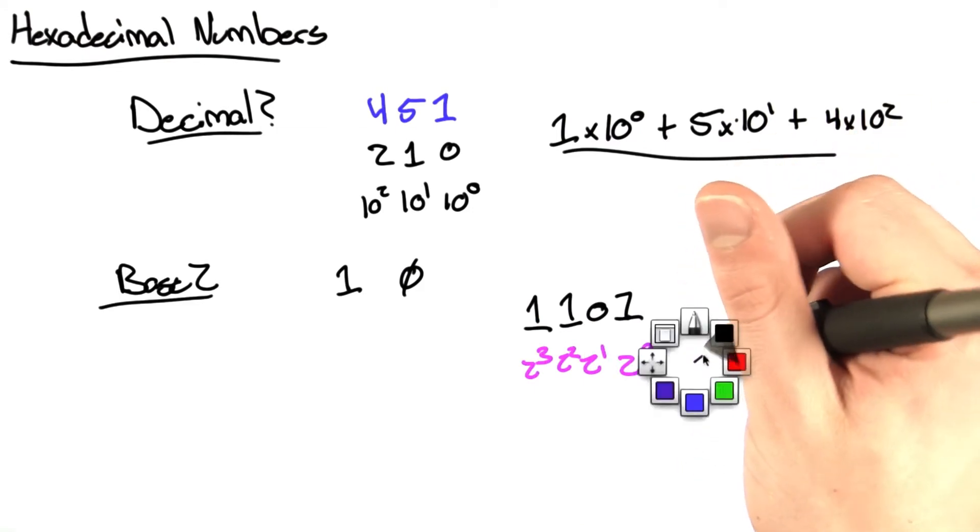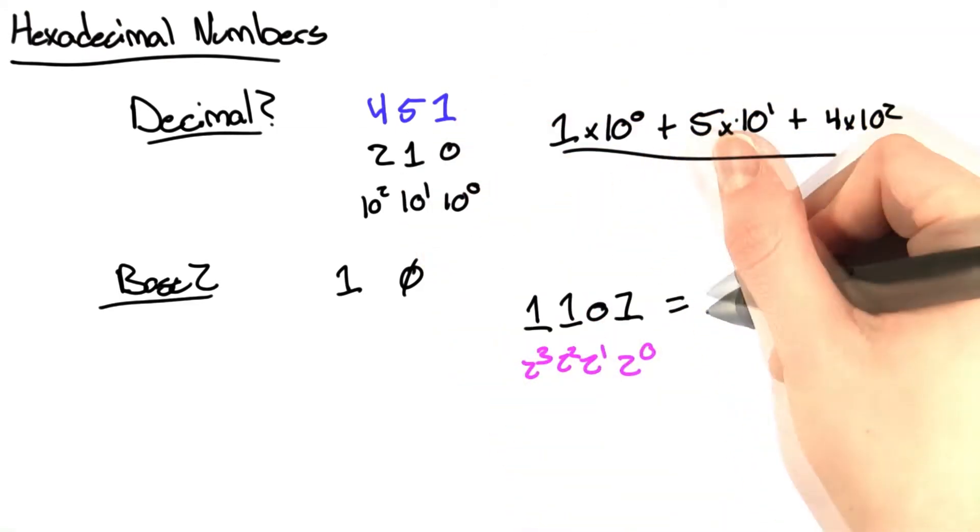And if we multiply all that out, like we did with the decimal number, we get 13.